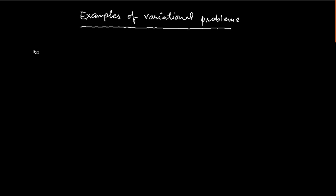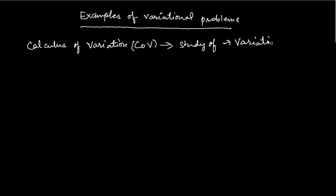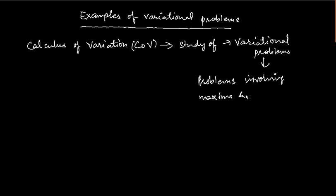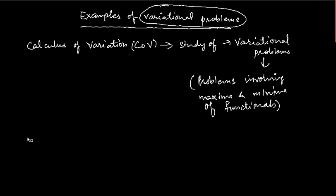In the last video, we learned that calculus of variation — I'll use COV as a short form — is the study of variational problems. And what are variational problems? These are problems involving maxima or minima of functionals. In this current video, we will look at examples of variational problems.